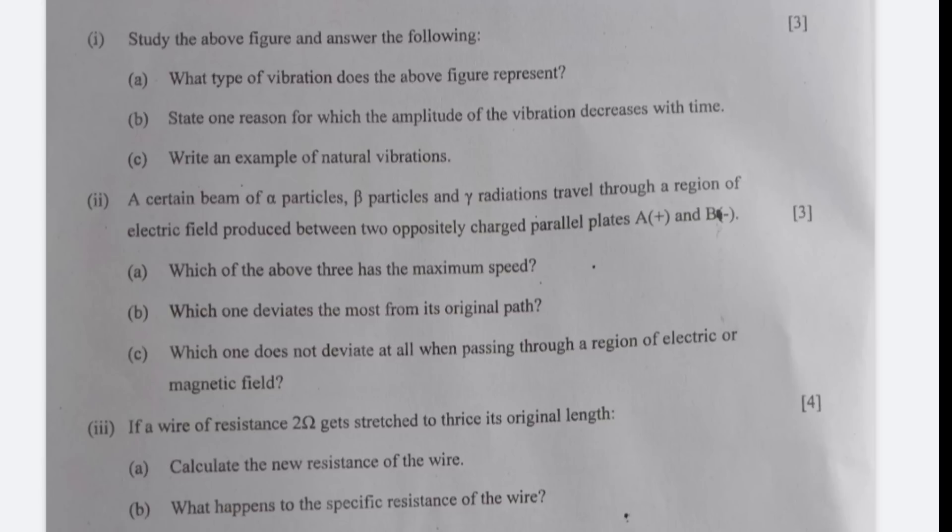The third one: if a wire of resistance 2 ohms gets stretched to thrice its original length, calculate the new resistance of the wire and what happens to the specific resistance of the wire. So this is how you calculate the new resistance of the wire which comes to 18 ohms and the specific resistance does not change, it remains the same.